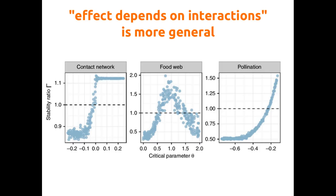To demonstrate this effect, we took three different empirical networks: a contact network, a food web, and a pollination network. We took the structure and changed a critical parameter — which could be the mean interaction strength, the variance, or the correlation depending on the network. Importantly, who is interacting with whom remains constant; what changes is how things are interacting. Depending on that, the effect of the network structure changes.